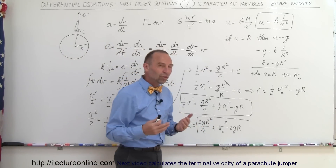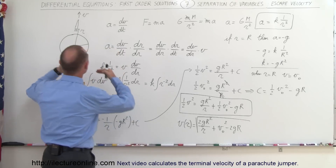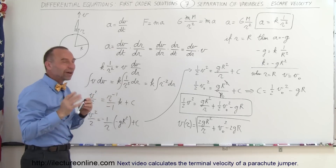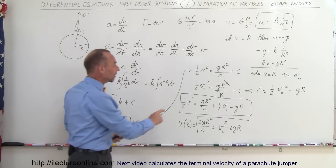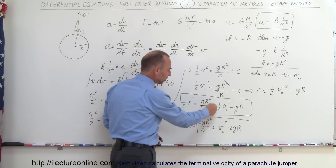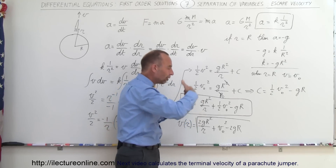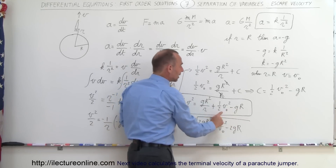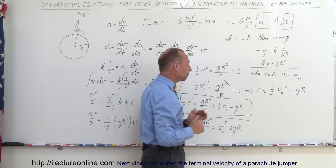The last thing is to find the minimum velocity the rocket needs so it will never be pulled back to Earth. Earth's gravity always tugs on the rocket, slowing it down. We want the escape velocity — the minimum initial velocity so that V never goes to zero or below zero. Notice the term 2gR squared over r goes to zero as R approaches infinity, so the quantity one-half V-initial squared minus gR must always be zero or greater, otherwise the rocket gets pulled back.